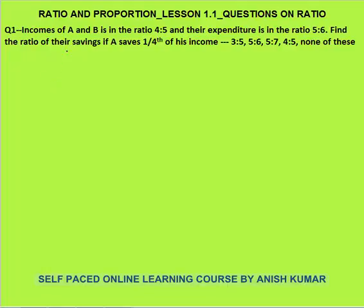First question: incomes of A and B are in the ratio 4:5. Whenever two numbers are in a ratio, we can take the income as 4x and 5x. Expenditure of both A and B are in the ratio 5:6, so I can take expenditure as 5y and 6y — y not x, because expenditure will be different from income, so the constants can be different.